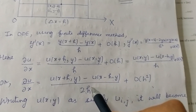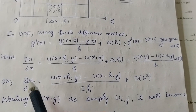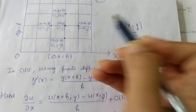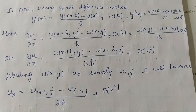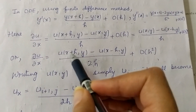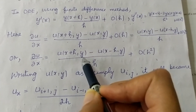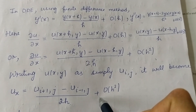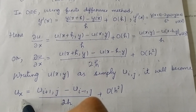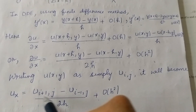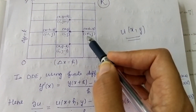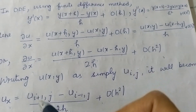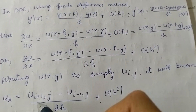This is the formula to find the partial derivative of u with respect to x. Using index notation (i, j) instead of (x, y): ux = [u(i+1, j) − u(i−1, j)] / 2h plus higher order terms of h². Here, x+h corresponds to index i+1, and x−h corresponds to i−1, while j remains the same.